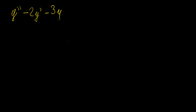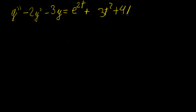I'm going to show that with a simple example that uses the same solutions we found in the previous videos. Let's say we have the differential equation y'' - 2y' - 3y = e^t + 3t² + 4t - 5 + 4cos(2t). These three parts are the three different functions from the previous examples, now combined together into a single function.